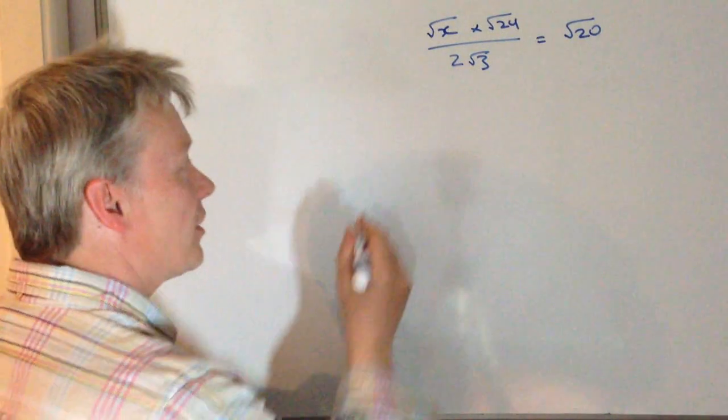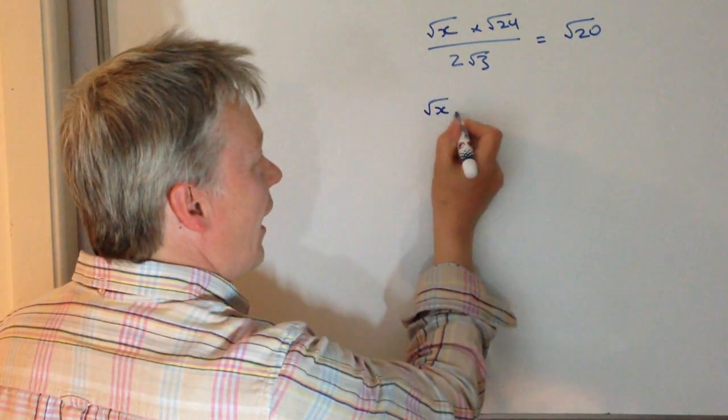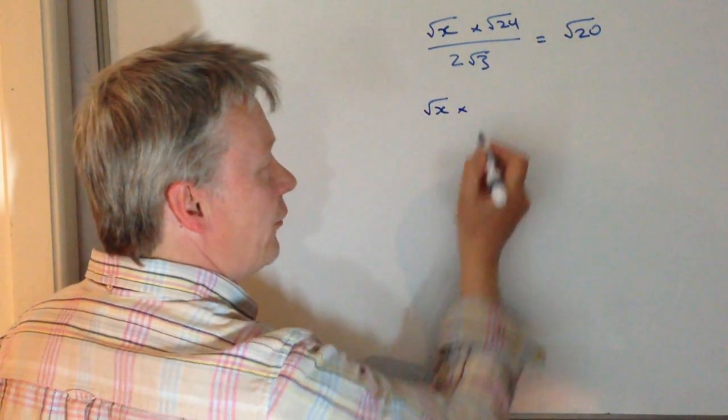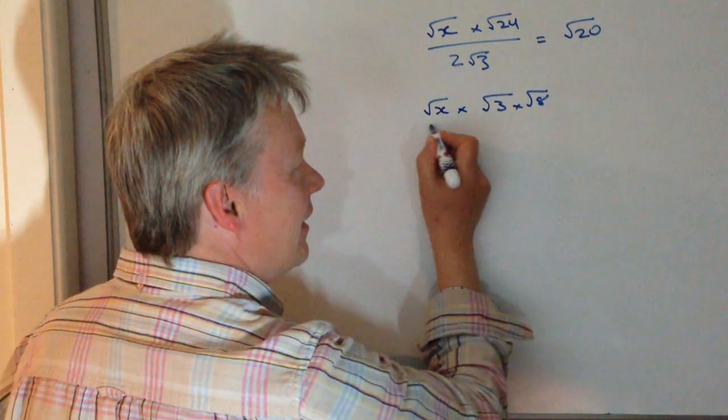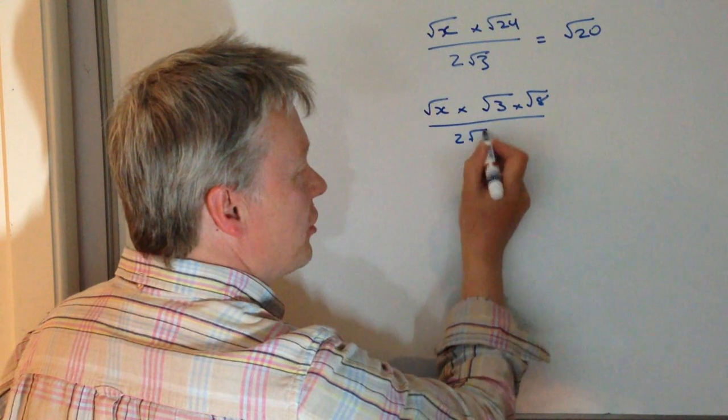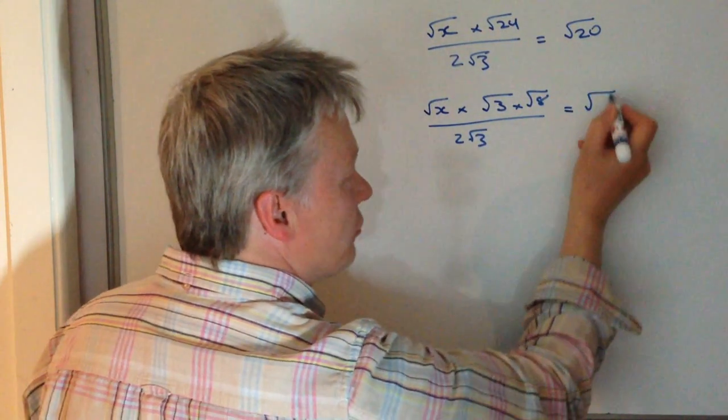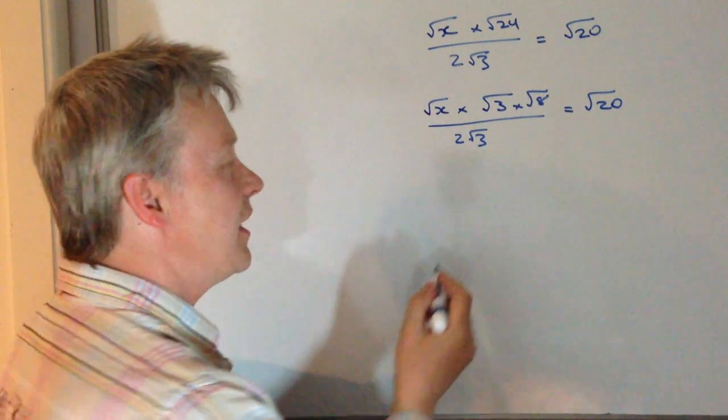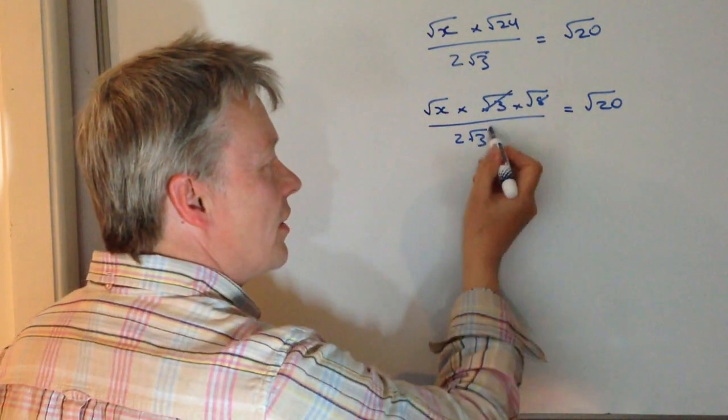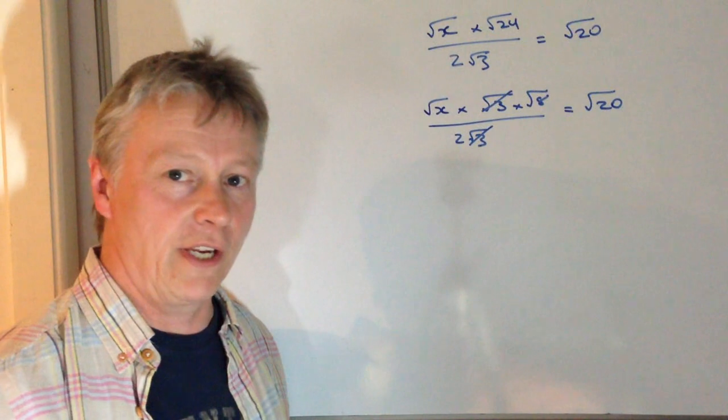Let me show you what I mean. So we can say root x times 24 is the same as saying root 3 times root 8, and that's all divided by 2 root 3 and that equals root 20. Well that's perfect for us because it gives us the opportunity to just get rid of those root 3s.